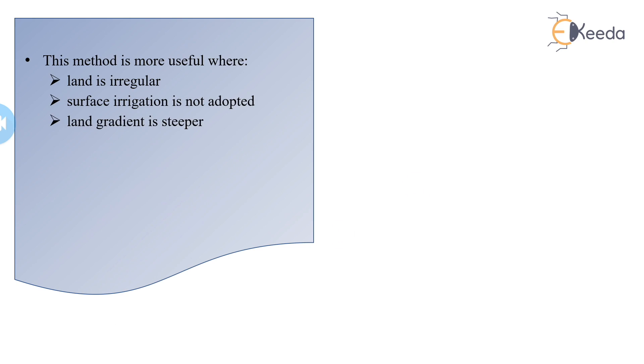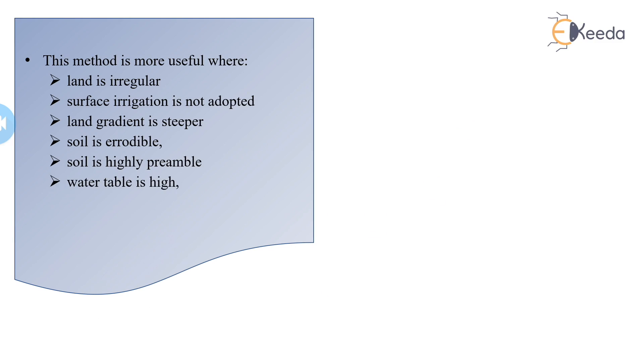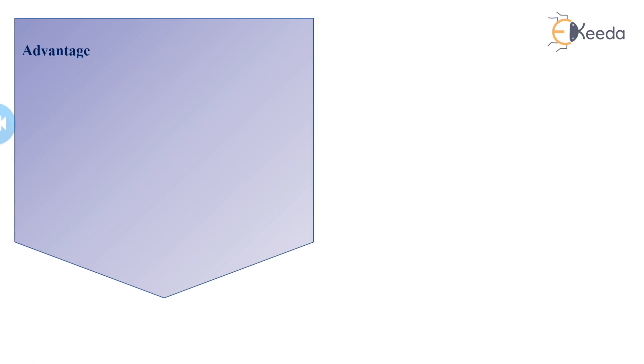When land gradient is steeper, because if land gradient is steeper, soil erosion will take place, hence we adopt sprinkler irrigation. When soil is erodible, when soil is highly permeable, when water table is high, when seasonal requirement of water is low - in these conditions, we can adopt sprinkler irrigation.